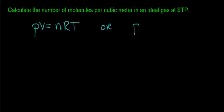Or we could use the alternative form of the ideal gas law which says that pressure times volume equals Boltzmann's constant times the number of atoms within our sample of gas times the temperature.